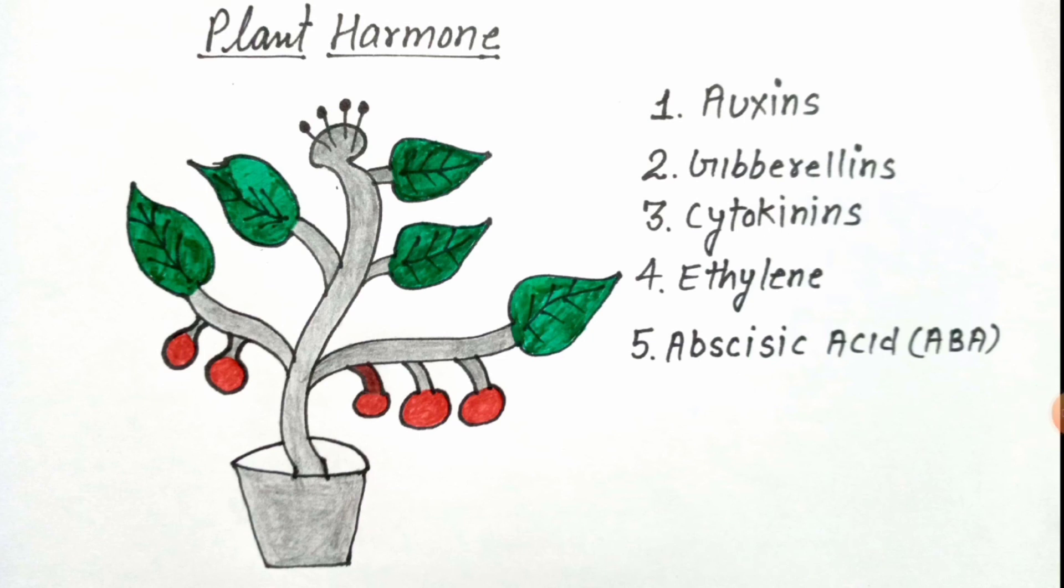Good morning students, I am Sunil Dutt, present here to deliver a lecture on plant hormones. There are five types of hormones in plants: auxin, gibberellin, cytokinin, ethylene, and abscisic acid.